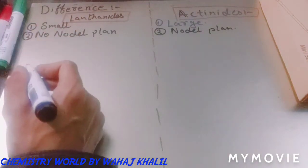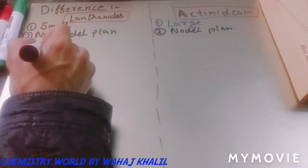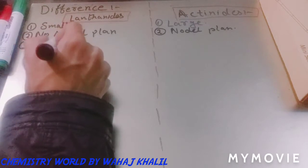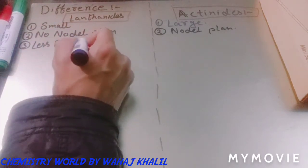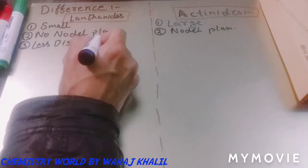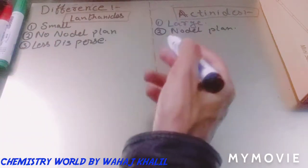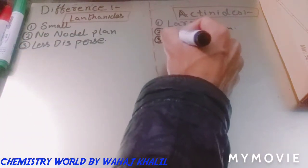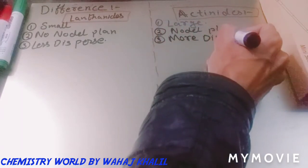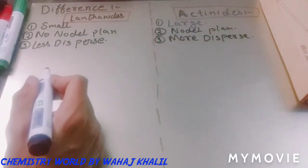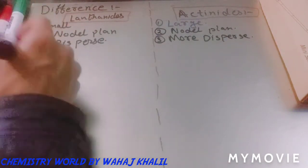Third difference: lanthanides are less dispersed because the inner shells are covered and they do not help to form complexes, so lanthanides are less dispersed. Actinides are more dispersed. This is also why the size of lanthanides was smaller.